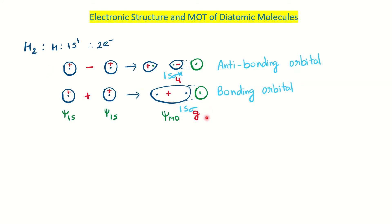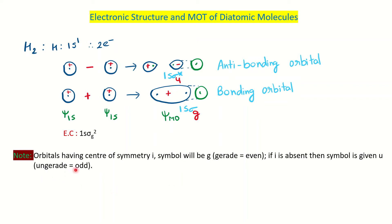The two electrons of hydrogen will occupy the ground state, which is 1sσg, so the electronic configuration is (1sσg)². You can note that orbitals having a center of symmetry — if you have knowledge of group theory — are identified as follows: from the center, if you go in equal and opposite directions and meet a similar atom or similar sign of the orbital, it is given gerade (even). If the center of symmetry is absent, it is ungerade (odd).